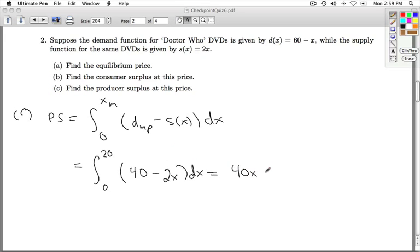Antiderivative of 40 is 40x. Antiderivative of 2x is x squared. Toss in the 20, 20 times 40, 800. 20 squared is 400. And so the producer surplus is 400. And once again, the units on that is dollars. We have dollars per DVD times DVD, so we're going to get dollars out of that.